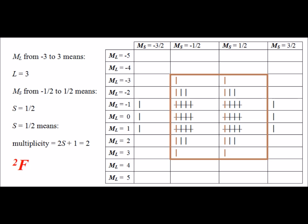Continuing, we look for the largest rectangular region with at least one microstate in each box, and we have one in the brown box. This box runs from big M sub S equals minus one half to plus one half, so the spin S equals one half. The big M sub L values run from minus three to plus three, telling us the angular momentum L equals three. L equal to three corresponds to a big F. Since spin S equals one half, the spin multiplicity is two, giving us a doublet F term for the microstates colored in brown.